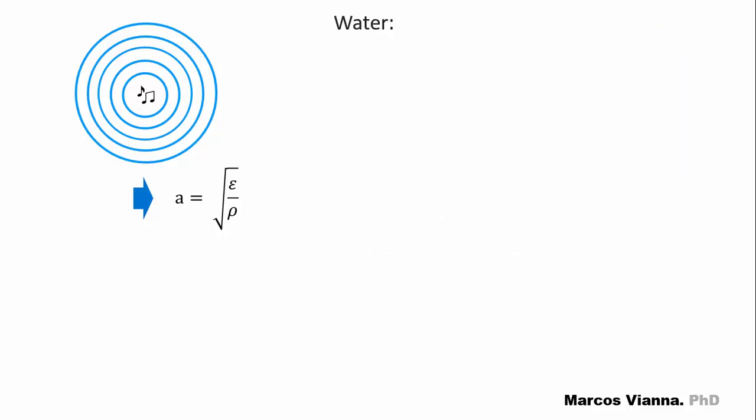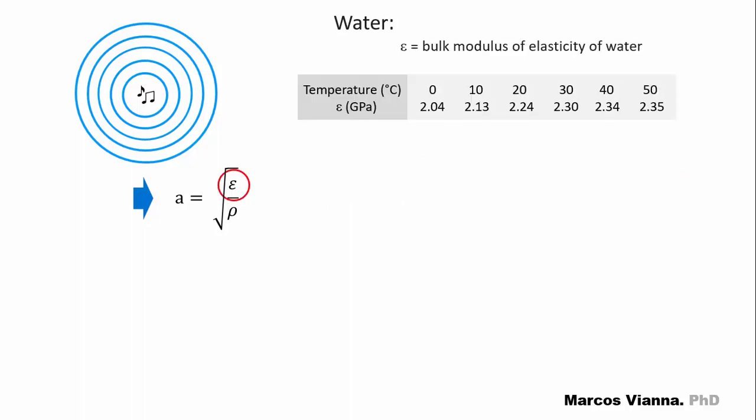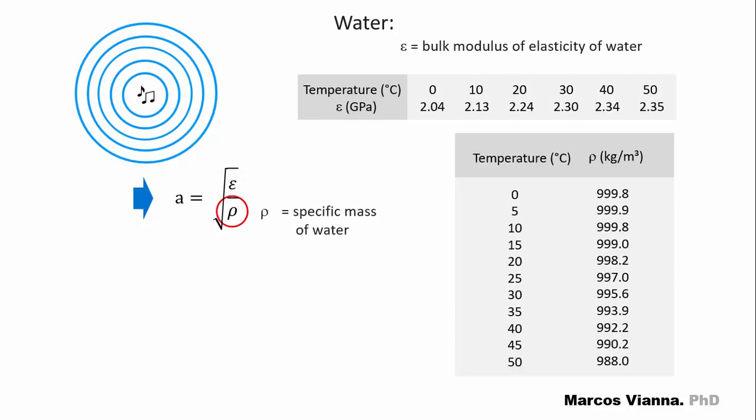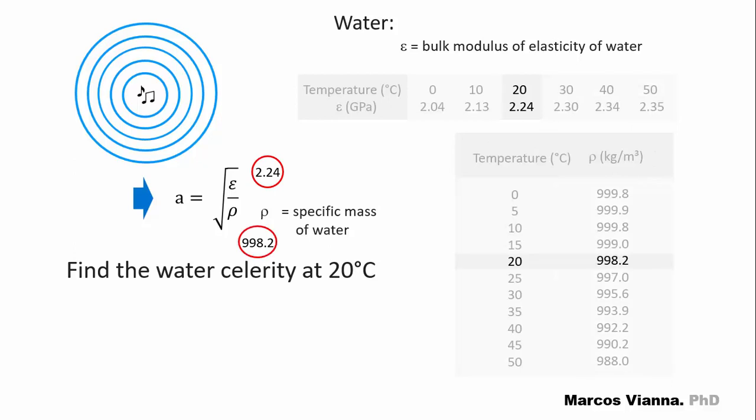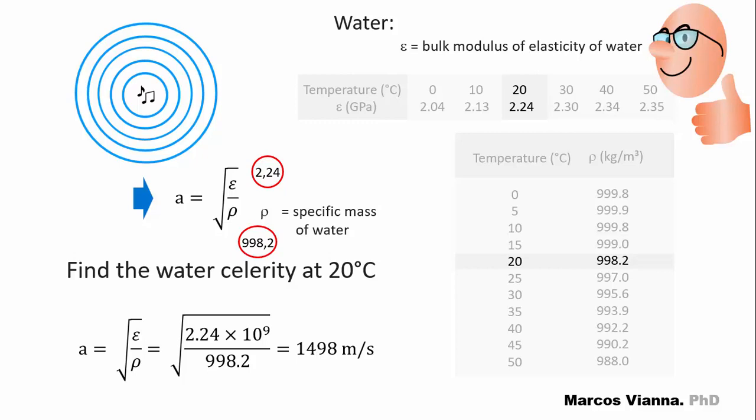Now, let's see what happens with water. We can assume that the elasticity modulus of water is constant at a given temperature. We can make the same assumption for its specific mass. So, we can find the celerity of water at a given temperature, say 20 degrees Celsius. Here is its elasticity modulus and its specific mass. We substitute the values and find 1498 meters per second. It's really fast, isn't it?